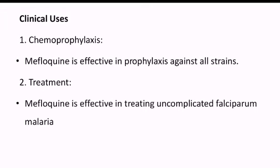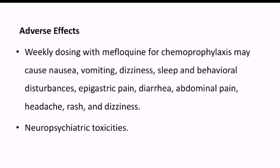Mefloquine is used for chemoprophylaxis and is effective in prophylaxis against all strains. It is also used for treatment of uncomplicated falciparum malaria. Side effects: weekly dosing of mefloquine for chemoprophylaxis may cause nausea, vomiting, dizziness, sleep disturbances, and behavioral disturbances. Epigastric pain, diarrhea, abdominal pain, headache, rash, and dizziness can also occur, and it can cause neuropsychiatric toxicity.